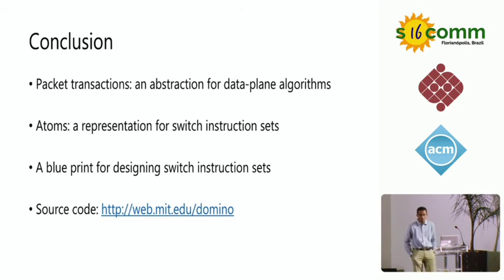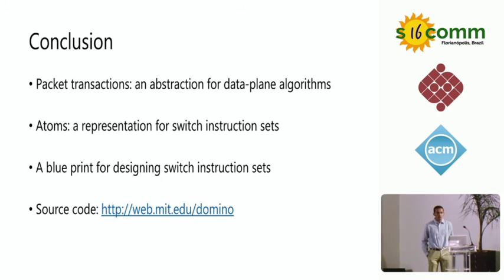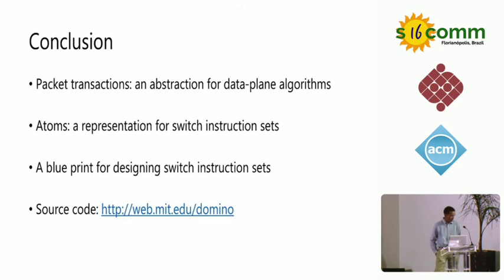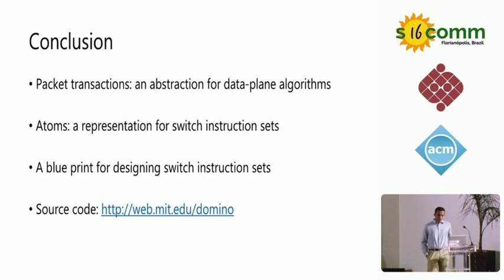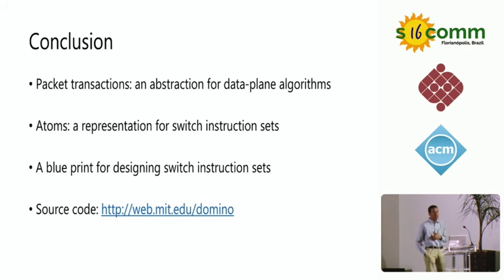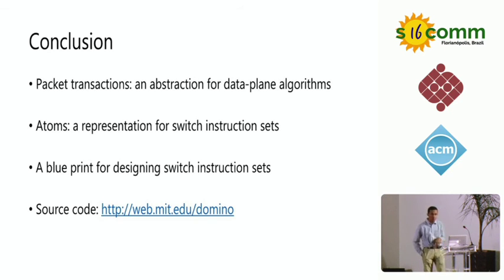Q: Do you think atomic transactions are the right primitive for building these pipelines, or are there cases where weaker guarantees would be sufficient and might allow a more flexible compilation strategy? A: Transactions simplify thinking about the problem because you get the guarantee that every packet is processed according to this piece of code. We've thought about weaker models like guaranteeing transaction semantics only on a sampling of packets, but we don't have any concrete answers to that yet.